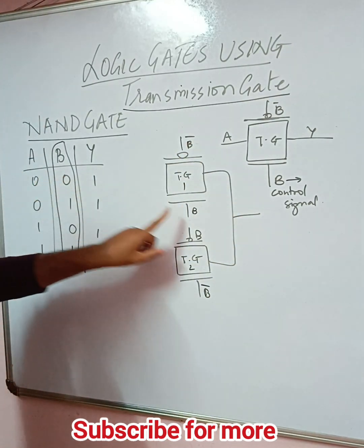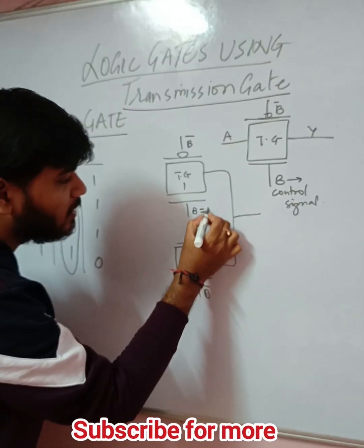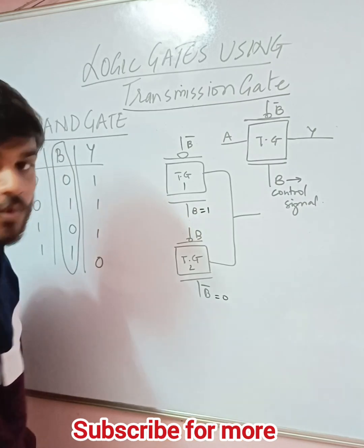This transmission gate will be activated only when B equals 1. This will be activated when B equals 1. This will be activated when B equals 0.